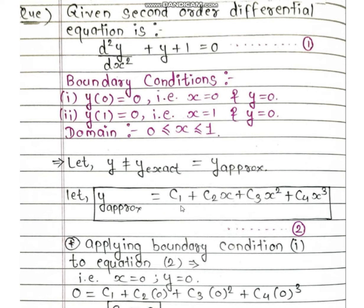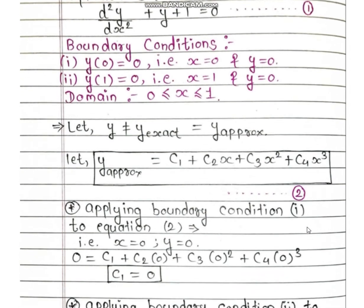Let us assume a polynomial equation to solve the differential equation: y_approximate = c1 + c2·x + c3·x² + c4·x³. There are four constants — c1, c2, c3, and c4 — because the given equation is second order. We have increased the power of x: c1·x⁰ + c2·x¹ + c3·x² + c4·x³. We will rename this as equation number 2.